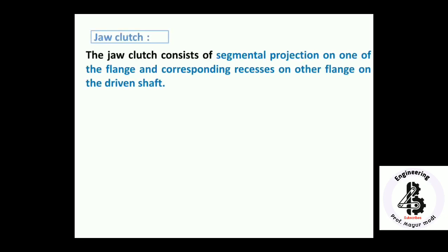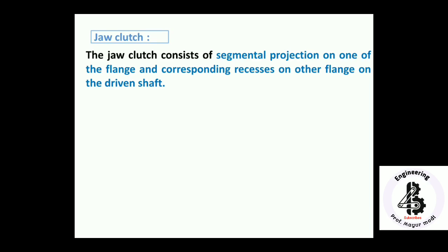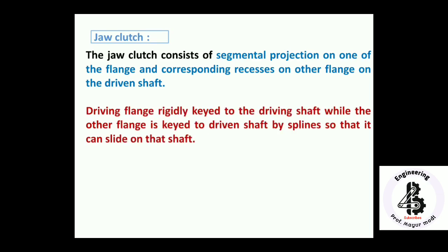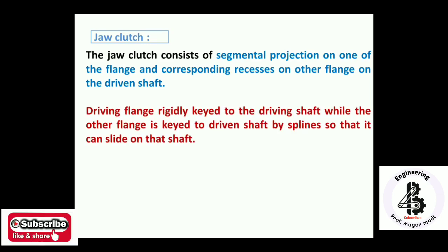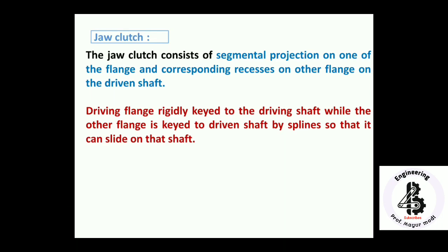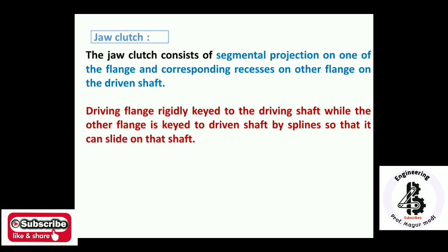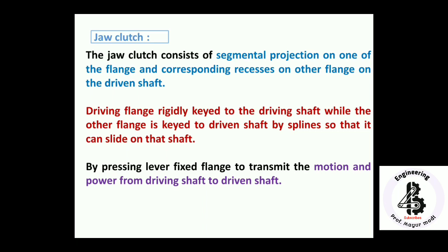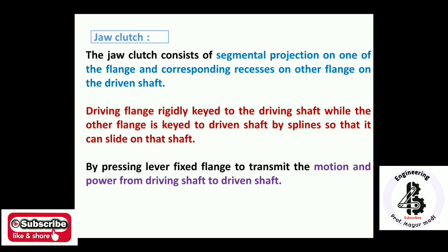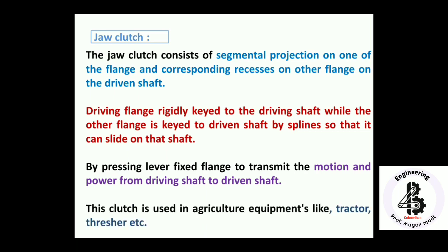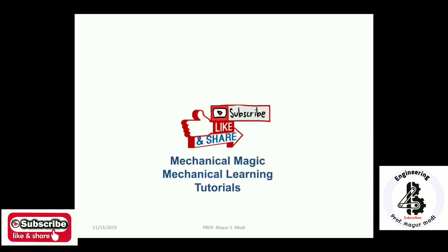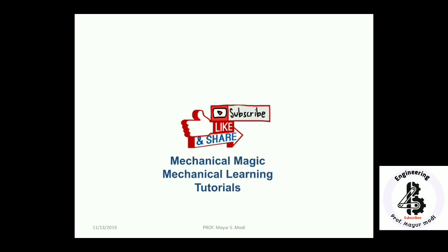In a jaw clutch, the clutch consists of segmental projections on one flange and corresponding recesses on the other flange. The driving flange is rigidly keyed to the driving shaft, while the other flange is keyed to the driven shaft using splines so it can slide on that shaft. By pressing the lever, the fixed flange transmits motion and power from the driving shaft to the driven shaft. This clutch is used in agricultural equipment like tractors and threshers. If you liked this video, please subscribe and share — Mechanical Magic, Mechanical Learning Tutorials. Thank you.